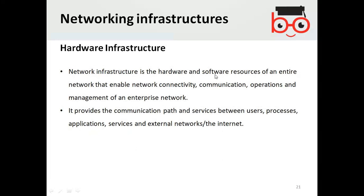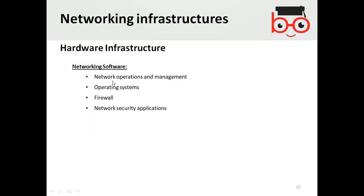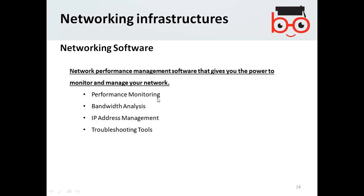Hardware infrastructure for a network includes routers, switches, LAN cards, wireless routers, and cables. Networking software includes network operating systems, firewalls, and network security applications. Additional software tools may include bandwidth monitoring, IP address management, and troubleshooting tools.